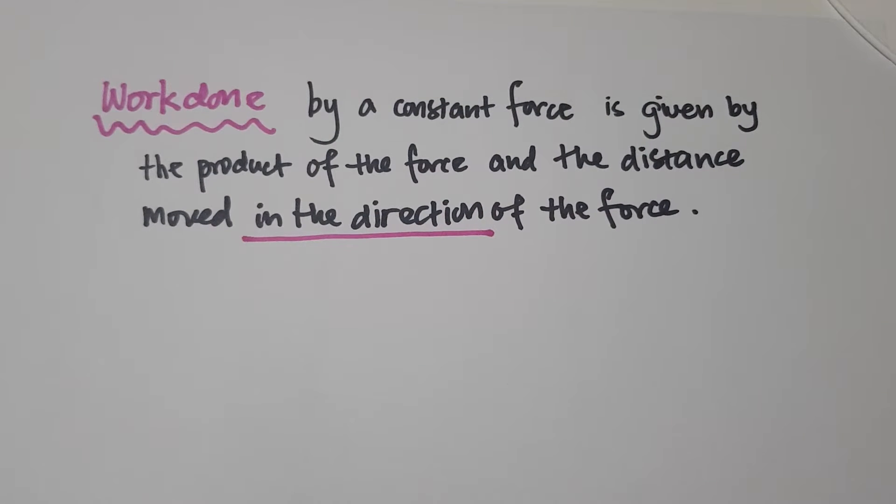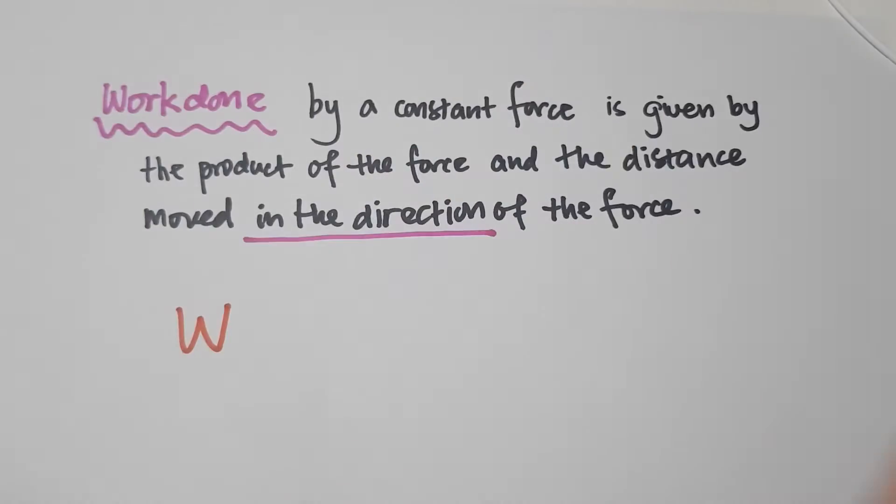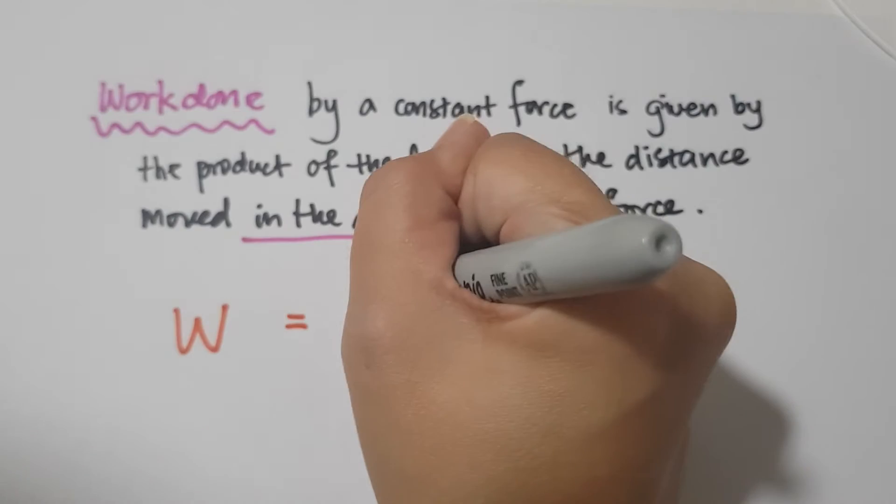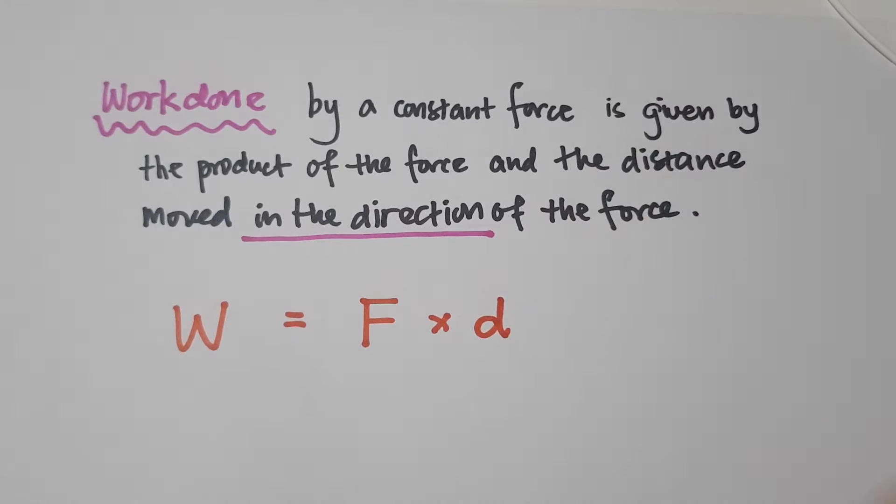So from this definition, we can see that the formula is work done equals force, and that is a constant force, times the distance moved in the direction of the force.